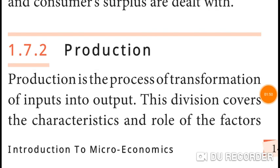The next one is production. Production is the process of transformation of inputs into output. We take raw material as input and the finished product — the usable product — is the output. That is production.